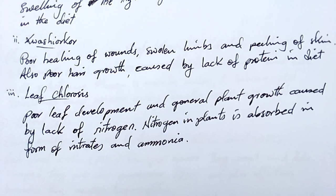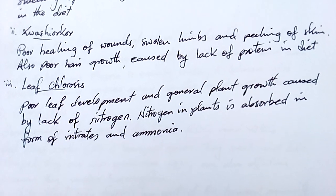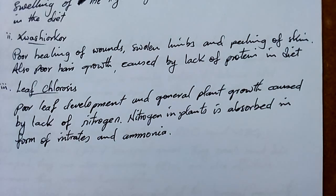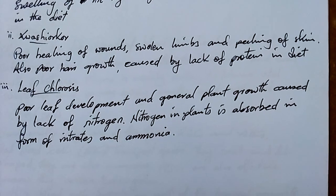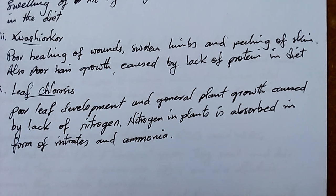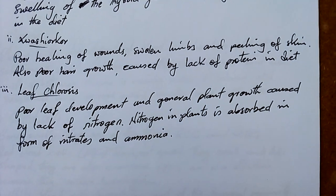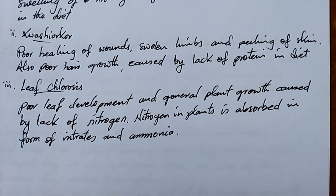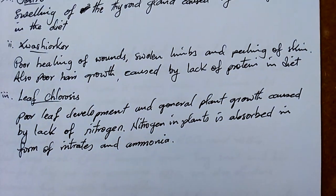Number three, leaf chlorosis: poor leaf development and general plant growth, caused by lack of nitrogen. Nitrogen in plants is absorbed in the form of nitrates and ammonia. If a plant lacks nitrogen, it will not be able to make amino acids and other things, and therefore leaf chlorosis results.